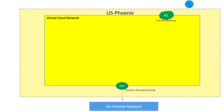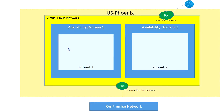Through the dynamic routing gateway, you can create an IPsec tunnel or use Oracle FastConnect and directly connect to your instance so it will not be exposed through the internet. Within the virtual cloud network, you will have availability domains. These are subgroupings of instances — bare metal machines or virtual machines — within a data center.